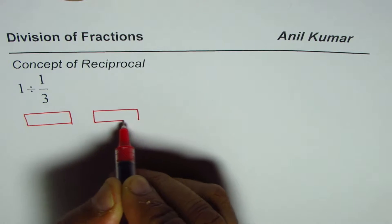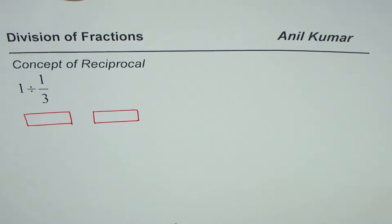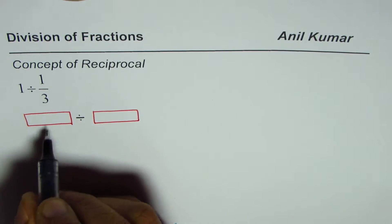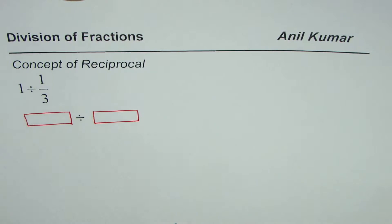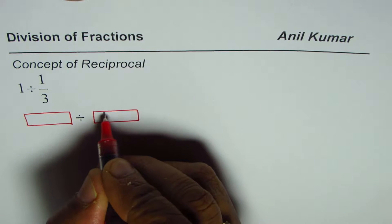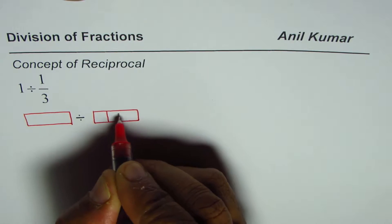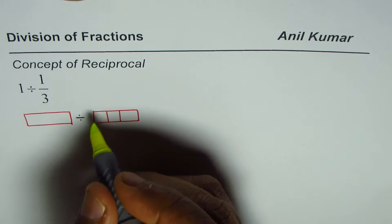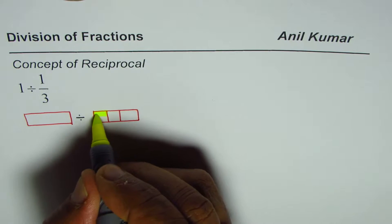Let's say this rectangle represents one whole and we need to divide by one third. So let us have this rectangle to represent one third. So what we're trying to do is divide one whole by one third. We'll divide this one into three equal parts and select one of them, so we get this much.